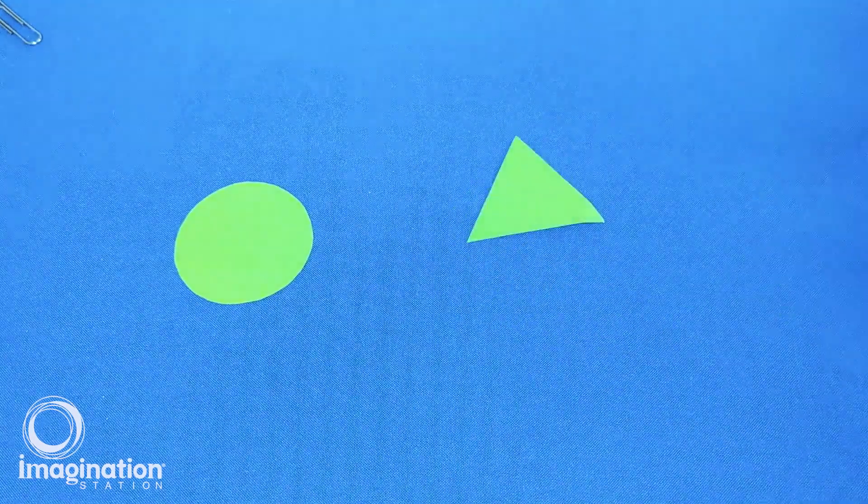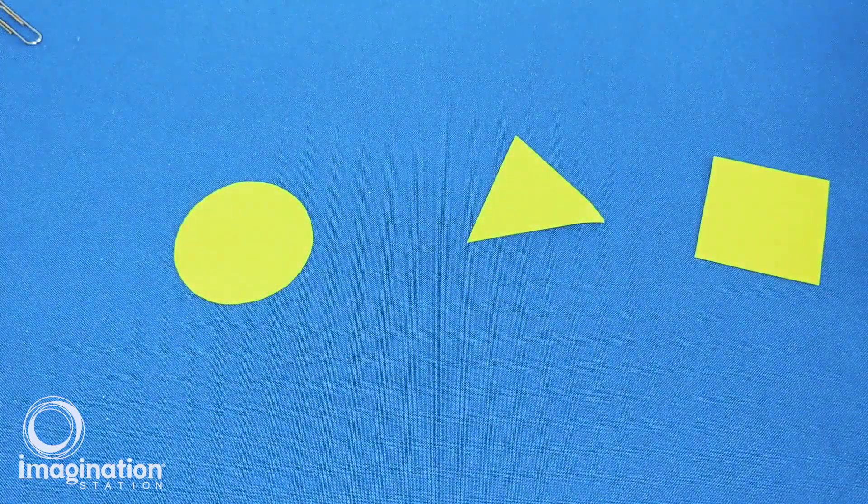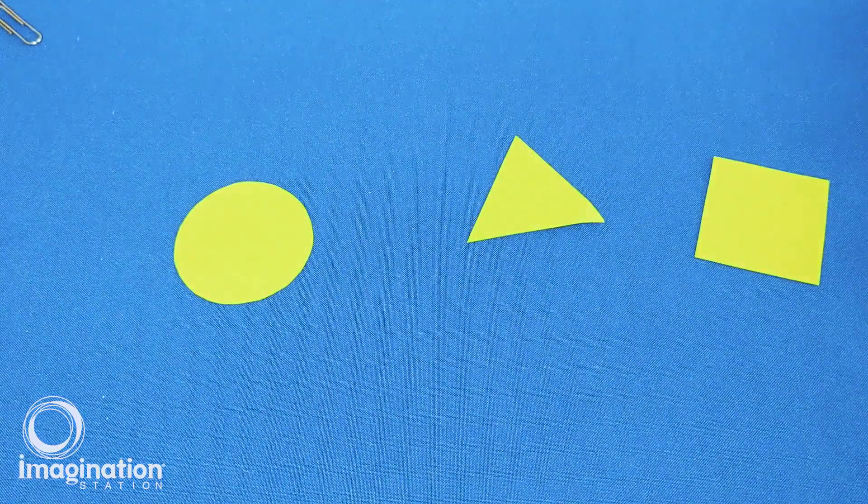Shapes such as circles, triangles, squares, pentagons, and so on are all two-dimensional.